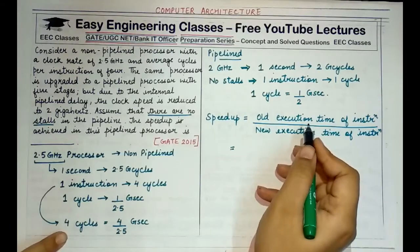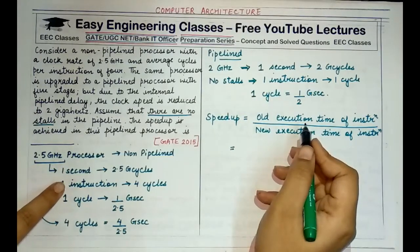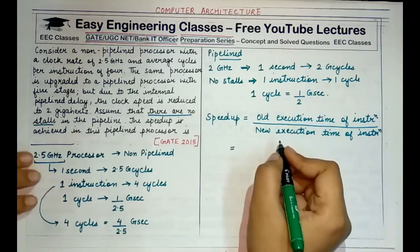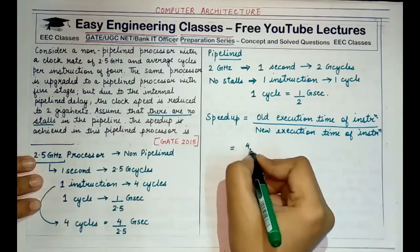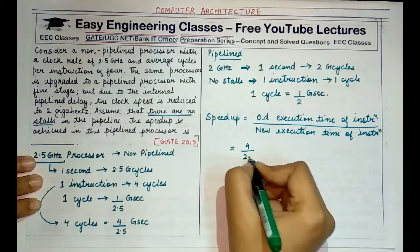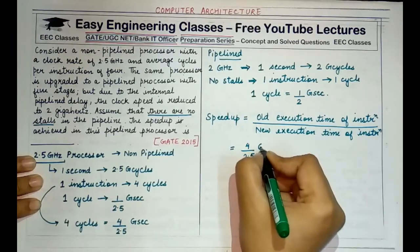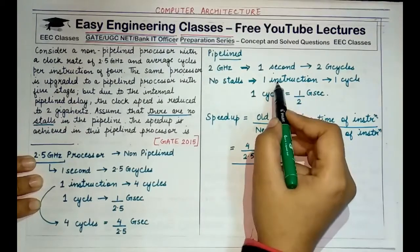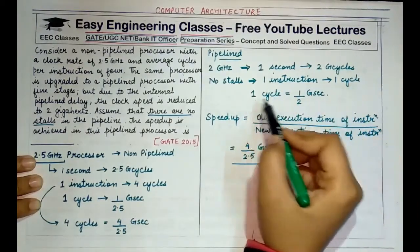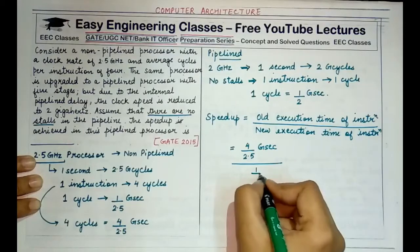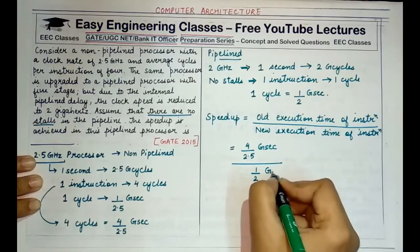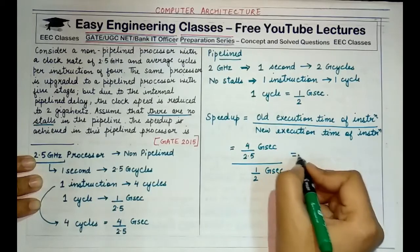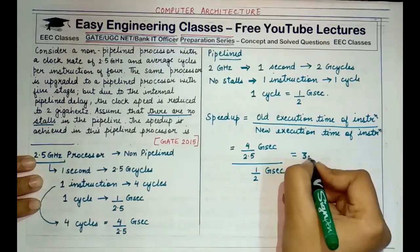Old execution time initially, one instruction was taking 4 cycles and 4 cycles needed 4 by 2.5 GHz to complete. So, the old execution time was 4 by 2.5 GHz and the new execution time is 1 instruction takes 1 cycle and 1 cycle takes 1 by 2 GHz. So, the new execution time is 1 by 2 GHz. So, the correct answer here would be 3.2.